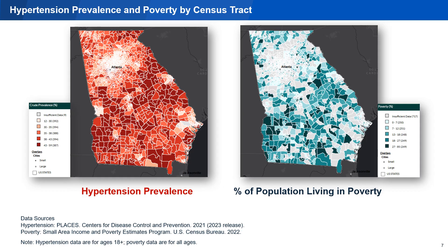Now that we've established hypertension prevalence and rural-urban patterns, let's examine a few community characteristics. The Atlas displays data for a range of community characteristics, including poverty. We are displaying patterns of hypertension prevalence — this time at the census tract level — and the percent of the population living below the poverty line, also by census tract. These maps could help to further specify where hypertension prevention and treatment programs are needed, and how to tailor them to the needs of those communities.